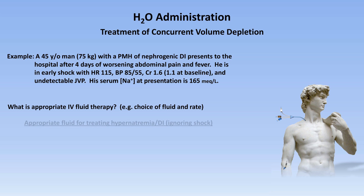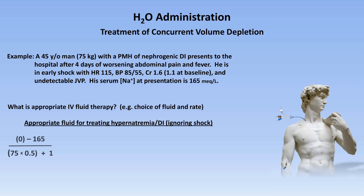First, let's ask what would be the appropriate fluid for treating his hypernatremia and DI, ignoring the shock. Since he has DI, D5W would be the appropriate fluid. Using the standard equation and plugging in zero for both the sodium and potassium concentration in the infused fluid, we calculate that his serum sodium should decrease by 4.3 mEq per liter for every 1 liter given of D5W.